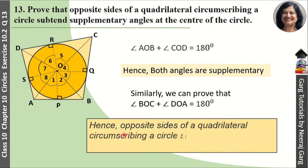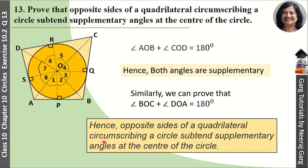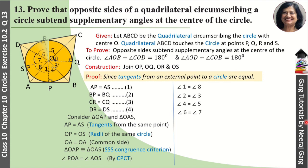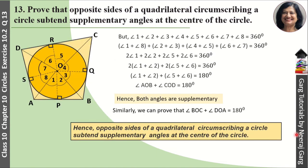Hence, we have proved that opposite sides of a quadrilateral circumscribing a circle subtend supplementary angles at the center of the circle. If you want to copy this question, you can pause the video or take a screenshot. You can see the complete question and solution here.